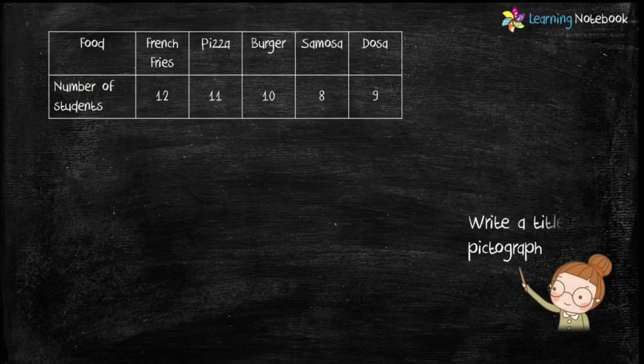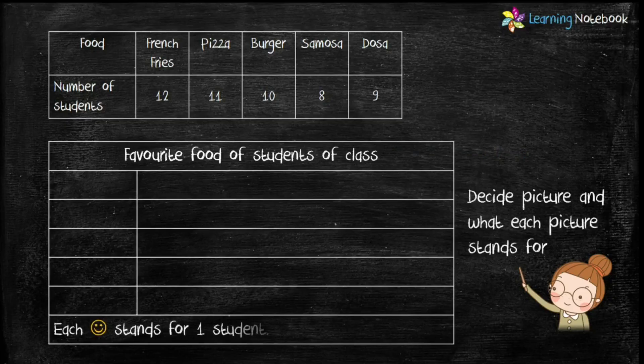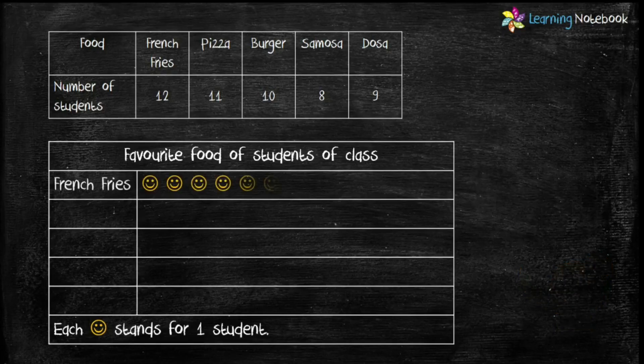The first step is to write a title for the pictograph — let's write 'Favorite Food of Students of the Class.' The next step is to decide a picture and what each picture stands for. Let's take a smiley as the picture, and each smiley stands for one student. Now let's represent the number of students who like french fries — that is 12 — so we draw 12 smileys representing 12 students.